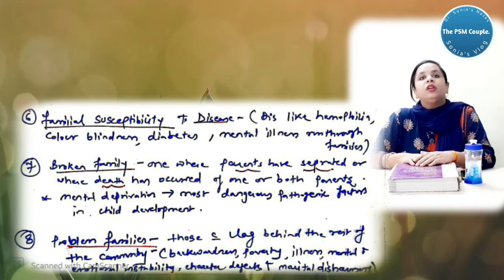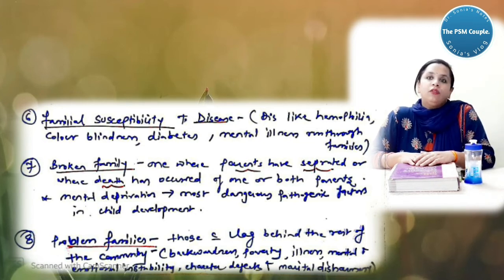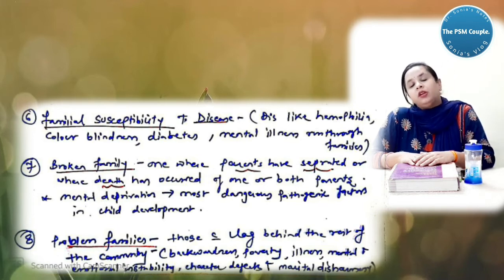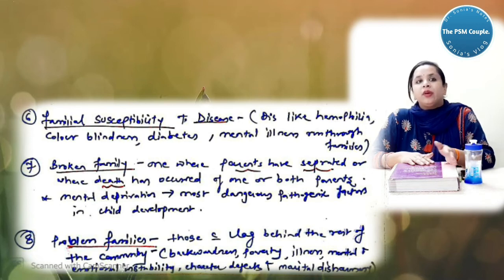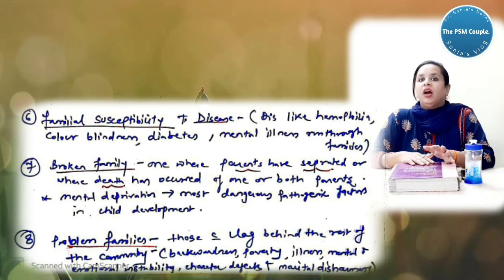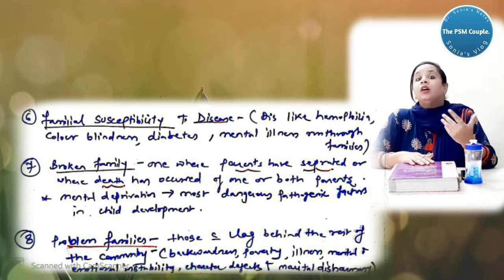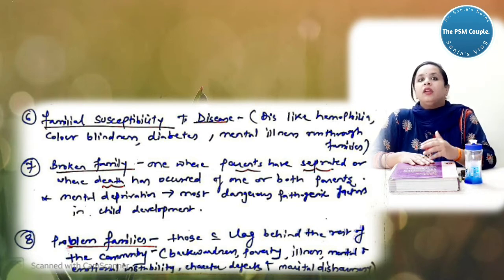Like you can see they have told about the stress: injury, illness, birth, death, tension, emotional upset, worries, anxiety, economic insecurity. They will discuss and deal with it. Then you have familial susceptibility to disease like hemophilia, color blindness, diabetes, mental illness through the families. Broken family: where the parents are separated or where death has occurred of one or both the parents. And mental deprivation: most dangerous pathogenic factors in the child development. If one parent is dead or both parents are dead, that is broken family and it gives certain impact on the bringing up of the children.